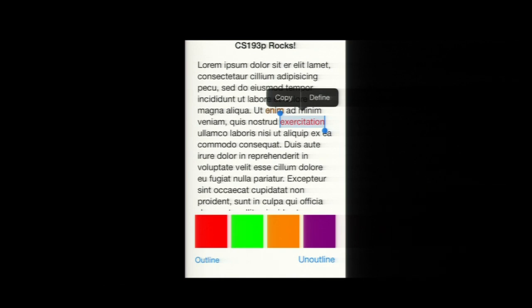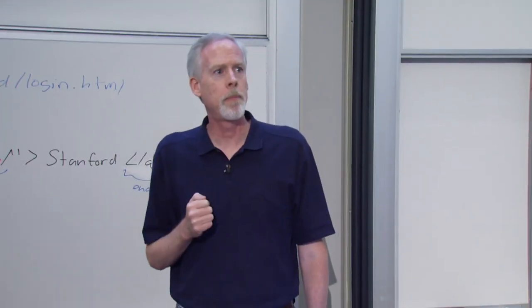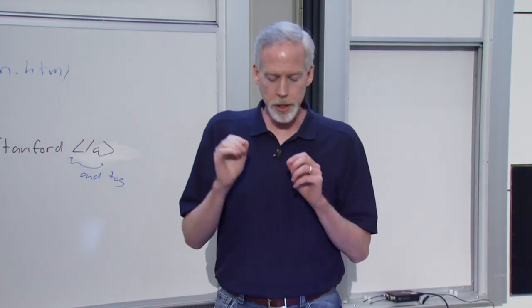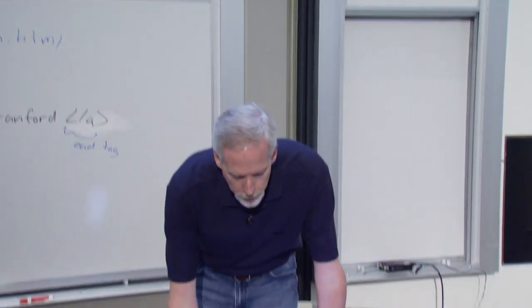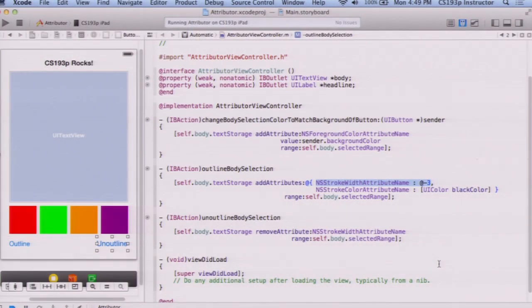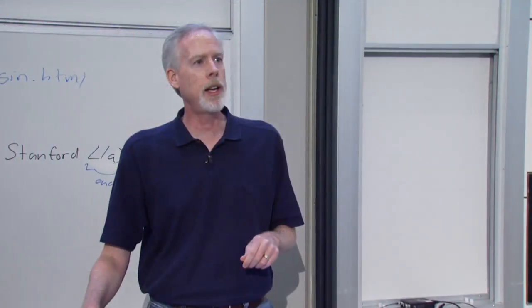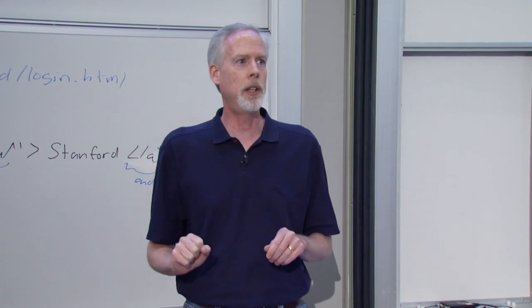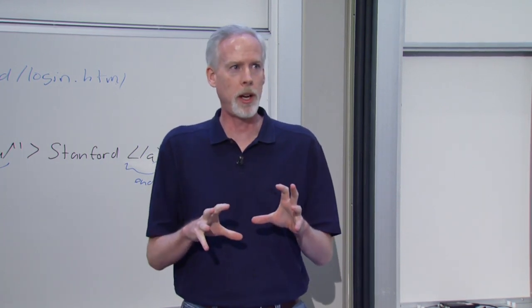Question: what's the difference between negative 3 and positive 3 for stroke width? Negative 3 means stroke width of 3 and also fill — the character fills with the foreground color plus gets stroked on the outside. Positive 3 means stroke only, not fill — the inside would be clear. I'll show the difference in a demo later where we see the outline button itself outlined without fill.